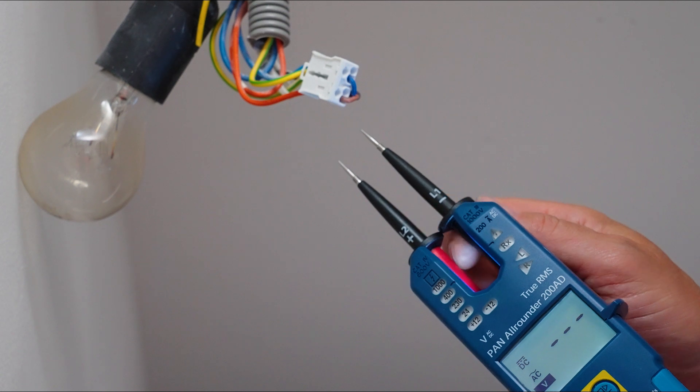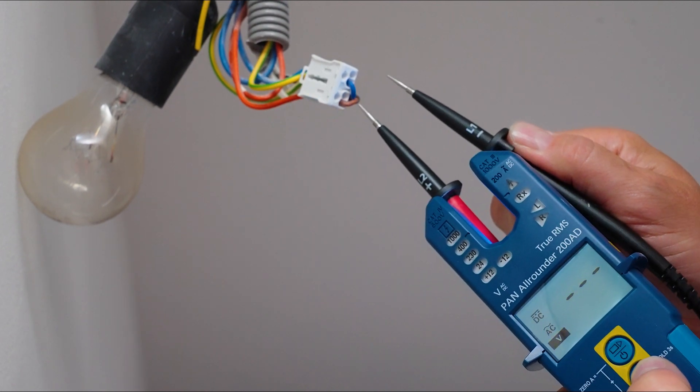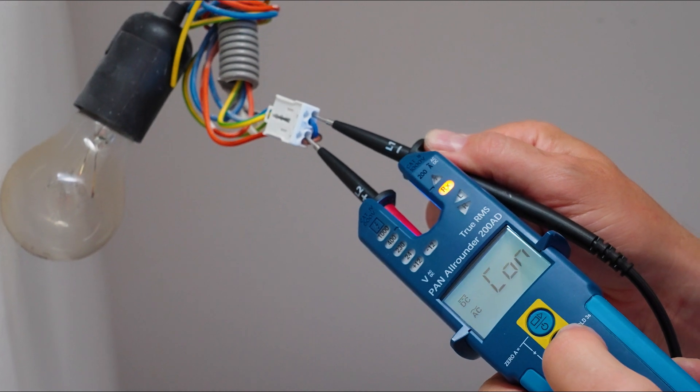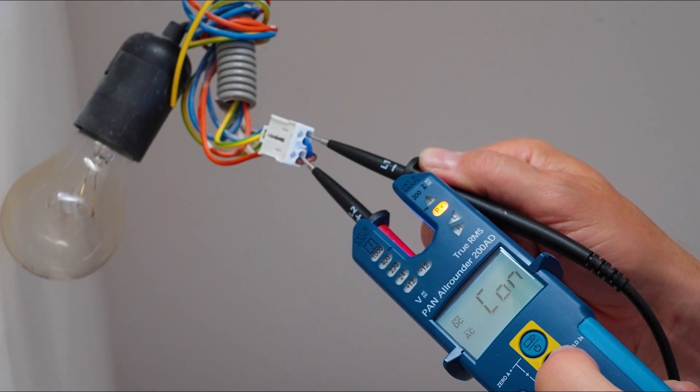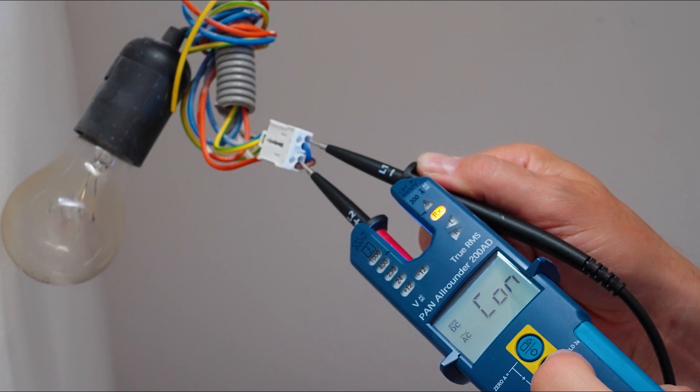One test tip remains in the device while we take out the other and touch both contacts of the terminal. There is no voltage, so we check the continuity of the lamp.